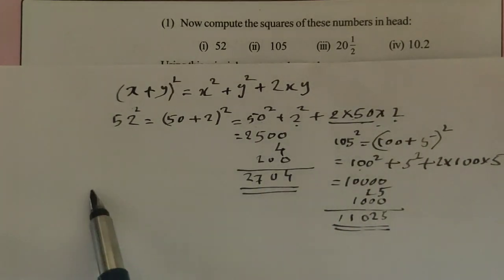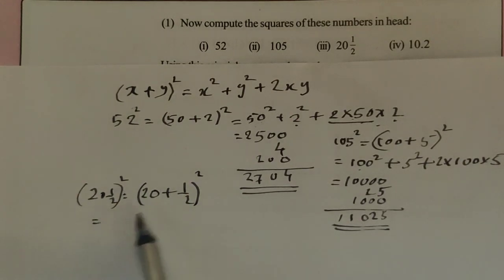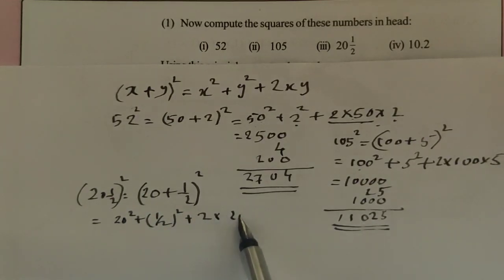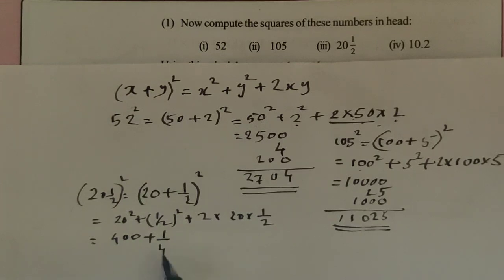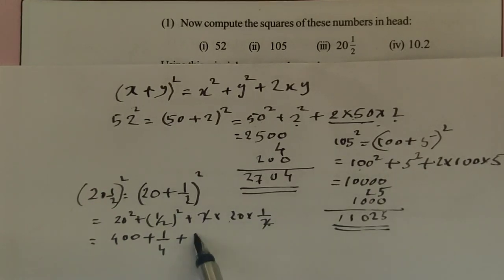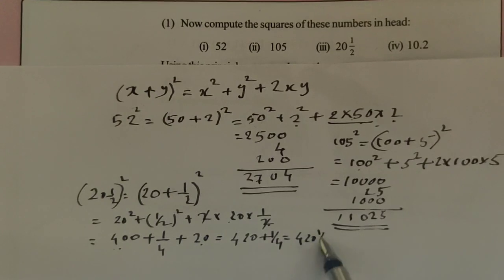Next, 20 and a half squared. 20 and a half can be written as 20 plus one half the whole square. Using the identity: 20 square plus half square plus 2 into 20 into one half. 20 square is 400, half square is 1 by 4, and 2 into 20 into 1 by 2 — the 2 and 1 by 2 cancel to give 1, so we get 20. Therefore the result is 400 plus 20 plus 1 by 4, which equals 420 and 1 by 4.